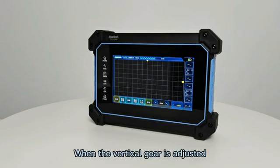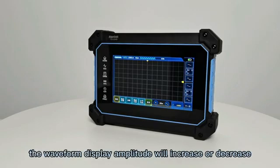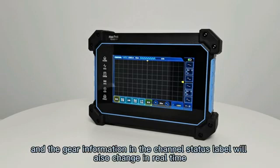When the vertical gear is adjusted, the waveform display amplitude will increase or decrease, and the gear information in the channel status label will also change in real time.